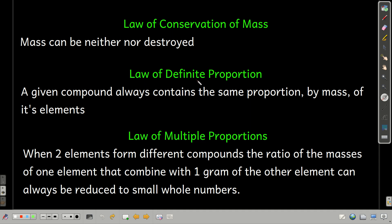The law of definite proportion says that if you have a certain compound — water, for example — no matter how much of that compound you have or where you get it, it always has the same proportion of mass of its elements. For example, water always has about one gram of hydrogen for every eight grams of oxygen, no matter how much you have or where you get it.